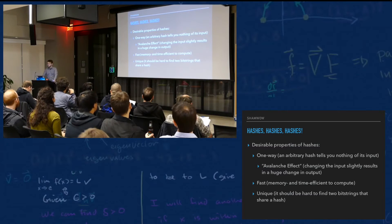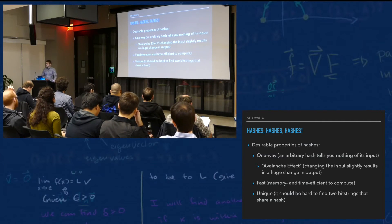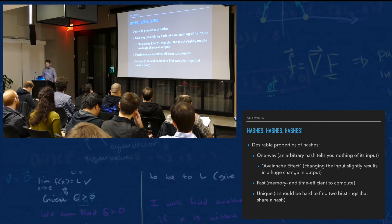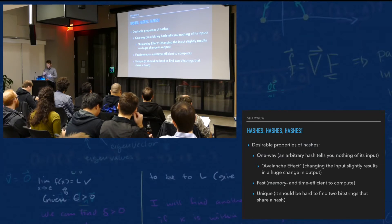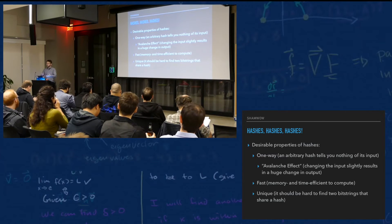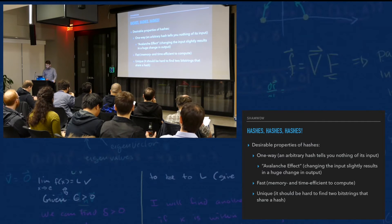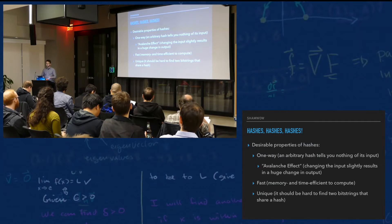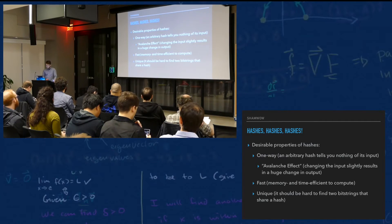Quick notes for people who don't know the answers to the questions I was asking. Some of the things you want in a hash: they're one-way — they're not encryption. You can't get data back out of a hash. There should be no trace of the input in the output. They're not reversible, except by brute force — running all possible inputs to get the output — or some flaw in the algorithm itself.